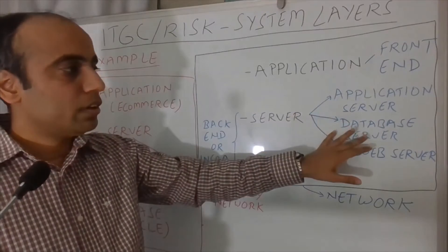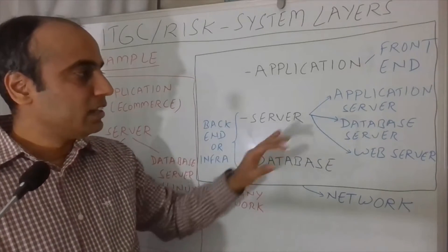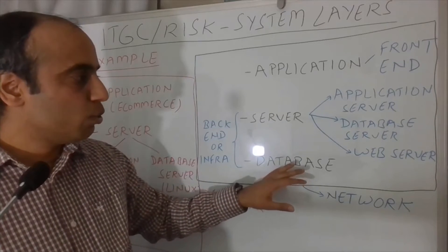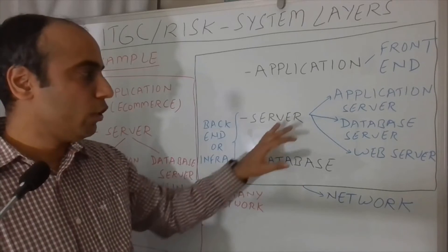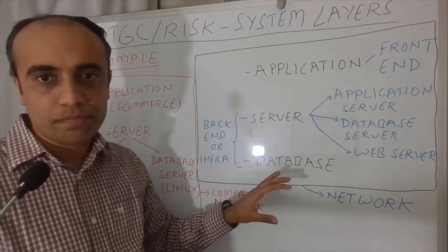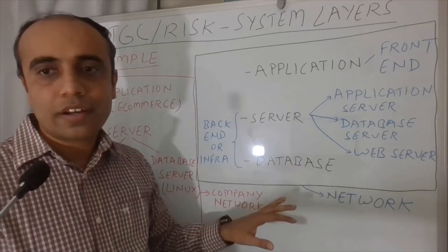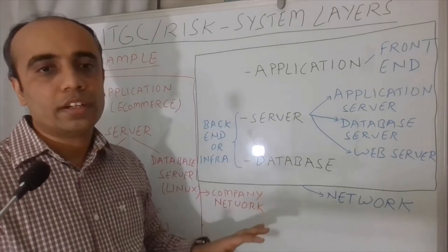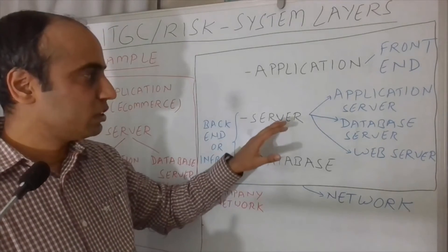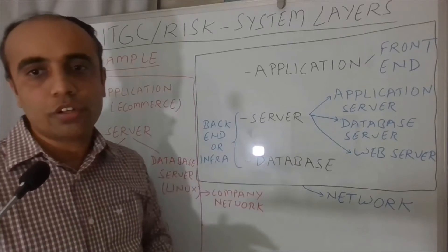Now the database server also supports or hosts a database. And this is the relationship between a server and a database. So a database is hosted on a server or an operating system because it needs an operating system to run. When we talk about this last layer, the database layer, as the name suggests, it is all about data which resides in a database. And we already talked about the simple relationship between the server and a database, where a database is hosted on a server.